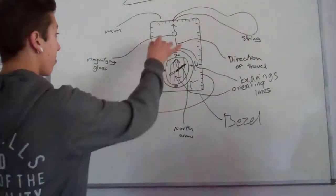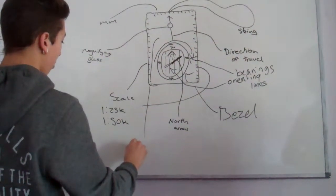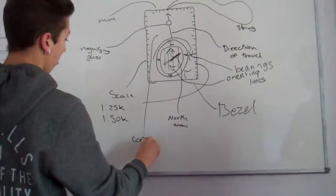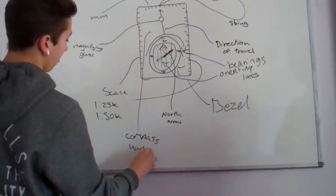And this bit here, all this plastic around the outside is the... it's the body of the compass, the compass housing. It literally just keeps it all together.